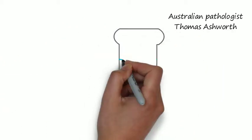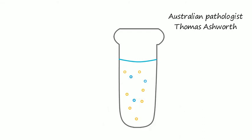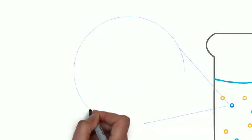In 1869, an Australian pathologist, Thomas Ashworth, firstly observed CTCs in the blood of a patient with metastatic cancer.